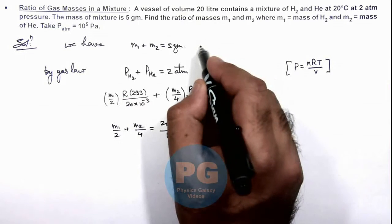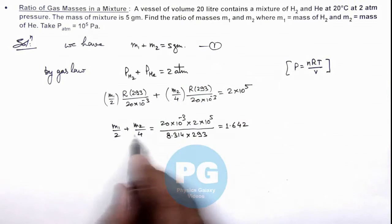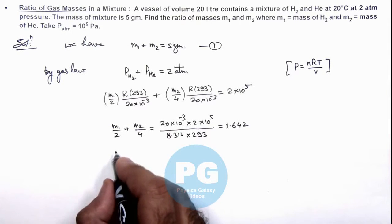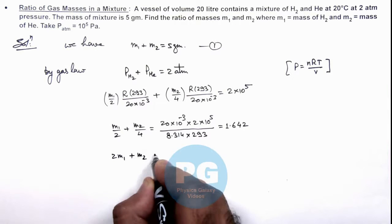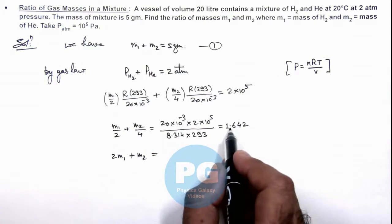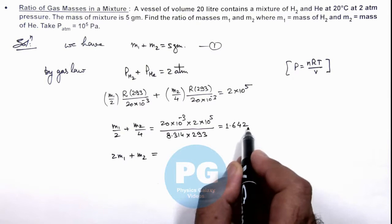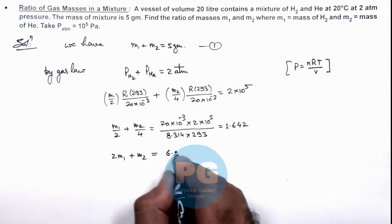If we consider this equation as equation 1, and we simplify this and rewrite as 2m1 plus m2 is equal to 4 multiplied by 1.642, so this gives us 6.57.